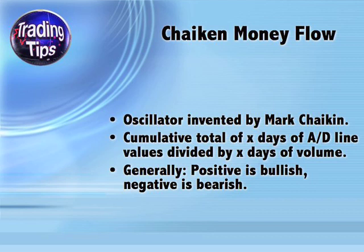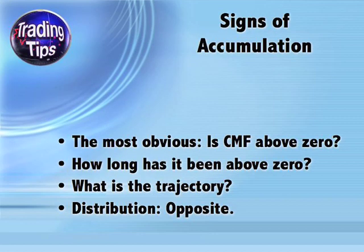Generally speaking, if a CMF value is positive, it's viewed as being bullish, and if it's negative, it's viewed as being bearish. The most obvious sign of accumulation is whether the CMF value itself is positive — if so, that's a good sign. For a stronger sign of accumulation, look at the duration that the value has been over zero. For an even stronger sign, consider the general trajectory: is the CMF getting higher and higher? If so, that's bullish. If it's on the decline, that's less bullish or possibly even bearish.